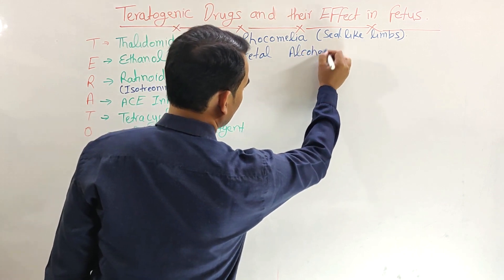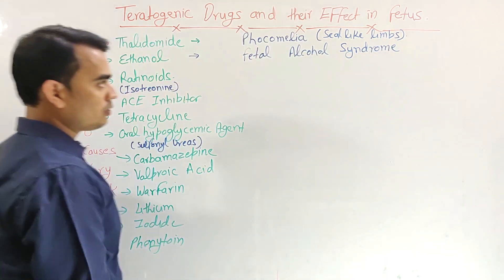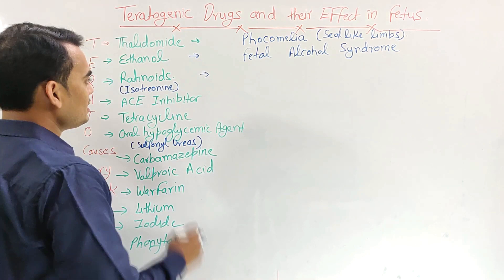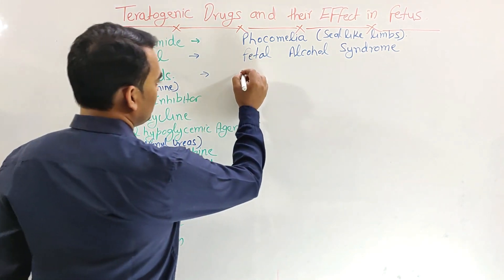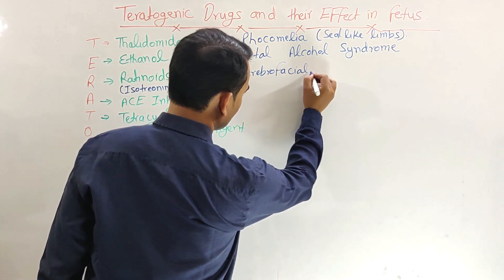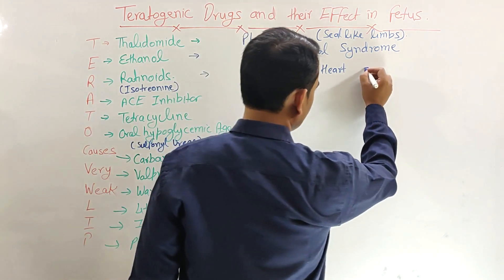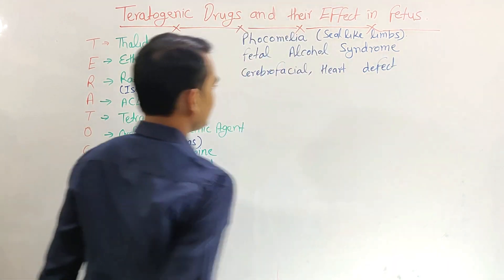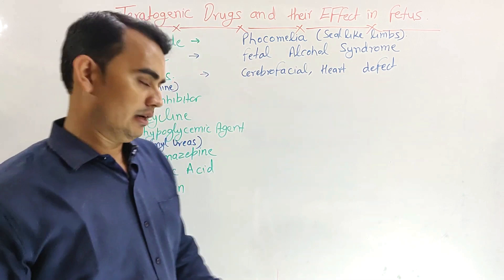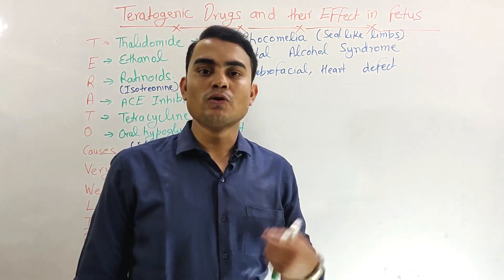Next is Ethanol, which causes Fetal Alcohol Syndrome in the fetus. Next, under Retinoids — mainly the drug Isotretinoin — the teratogenic effects include cerebro-facial and cardiac defects. It has malformative action on the brain, facial structures, as well as the heart.